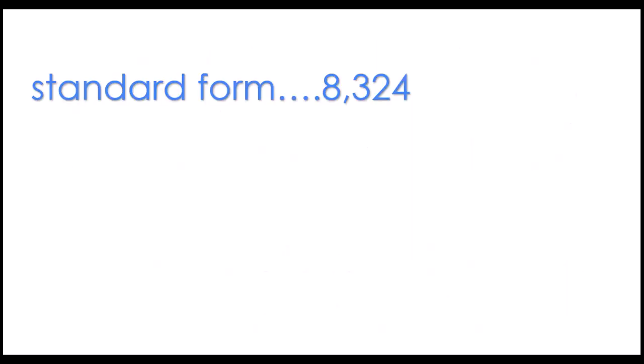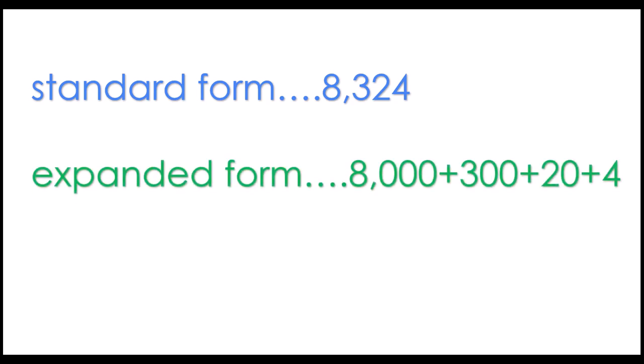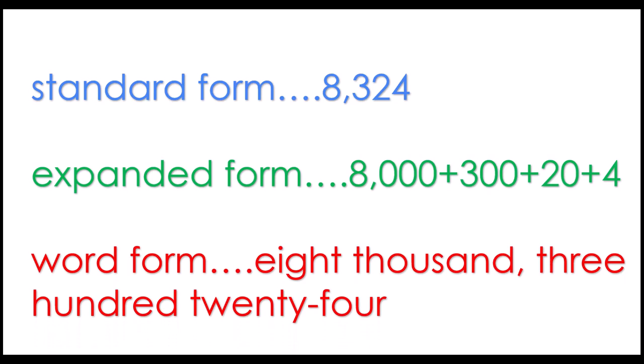Remember, standard form is when you write the number in a regular way like we normally see it on a daily basis. This number is 8,324. Expanded form is when we take the individual place values and expand them to their actual value. So we write out 8,000 plus 300 plus 20 plus 4. The 8 is in the thousands place, the 3 is in the hundreds place, the 2 is in the tens place, and the 4 is in the ones place. In word form we would actually write out every single number in words as we would say it with our mouth. So now you have the recollection of what standard form, expanded form, and word form are.